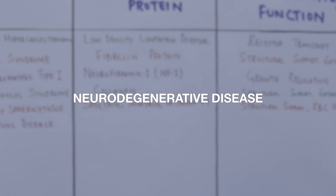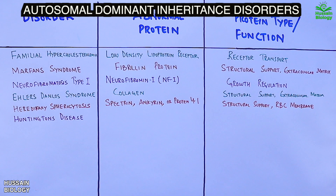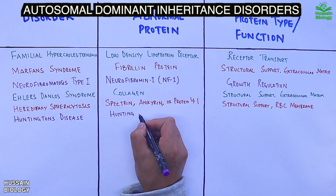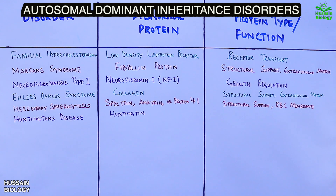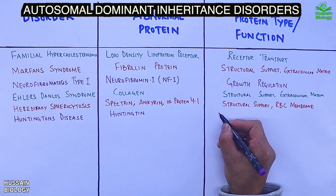Then we have Huntington's disease, which is a neurodegenerative disease caused by a mutated huntingtin gene that produces abnormal huntingtin protein. Under normal conditions, this protein aids in brain development and plays a role in axonal transport during the developmental process.